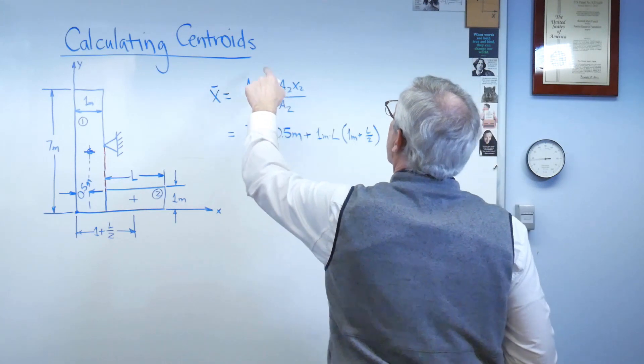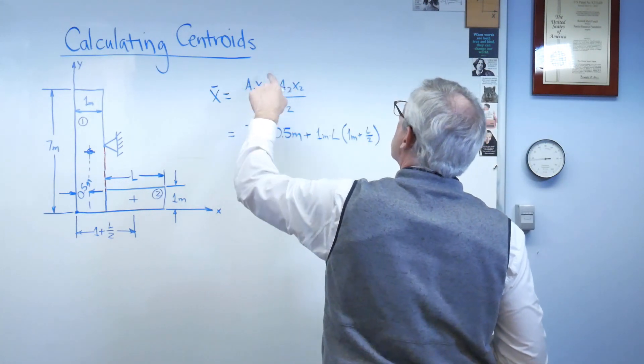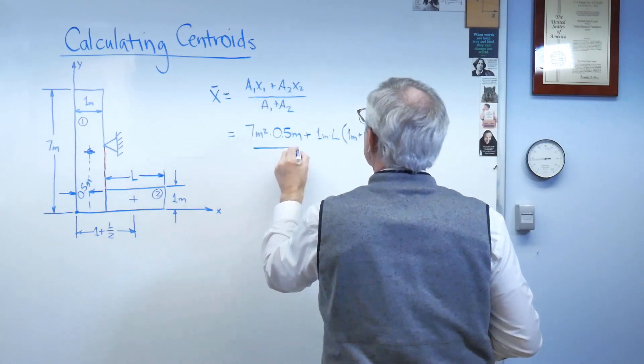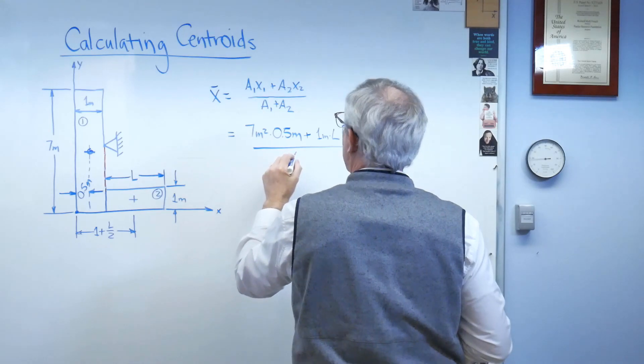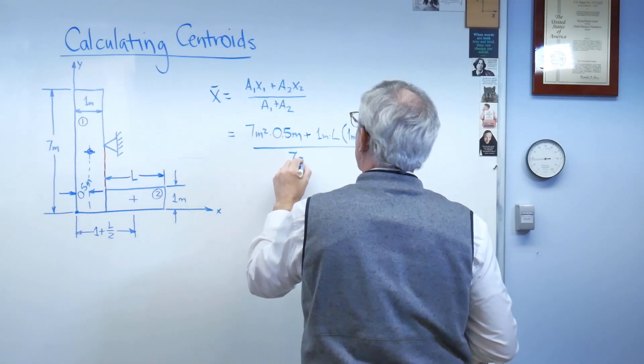So I've got a1, a2, x1, x2, and a1 is 7 meters squared.